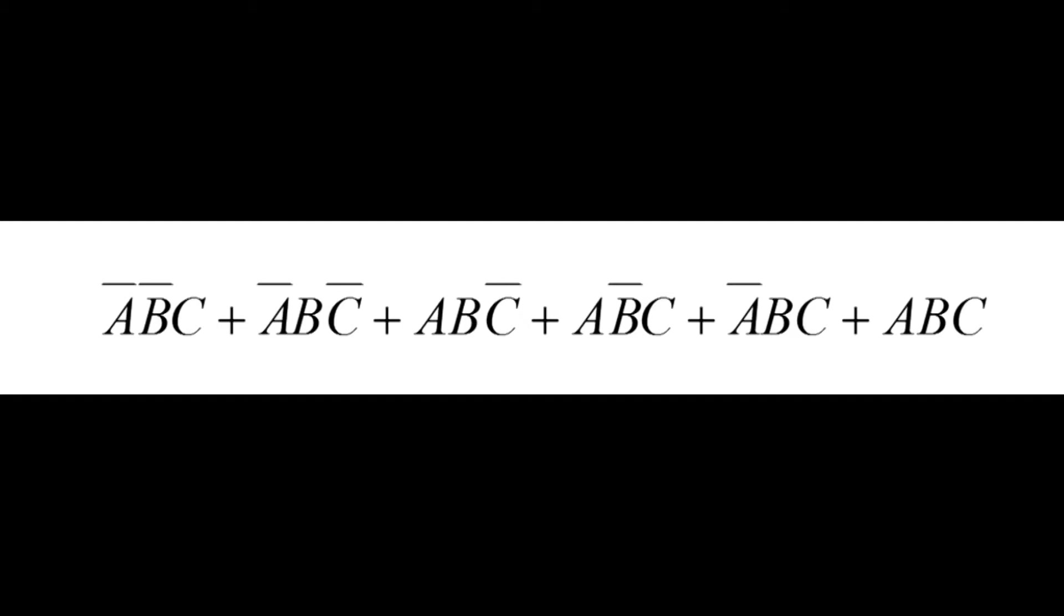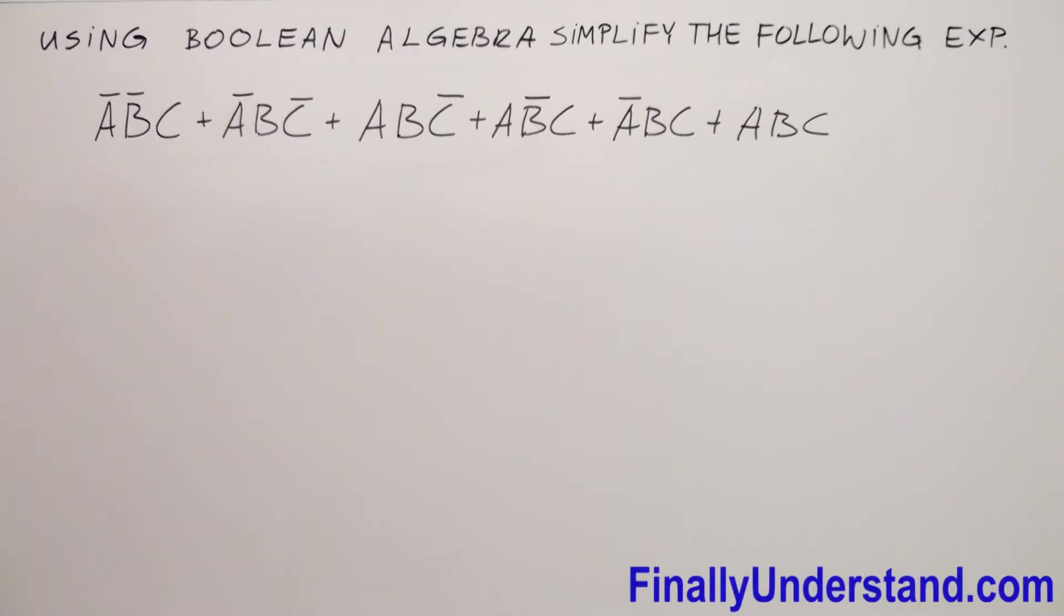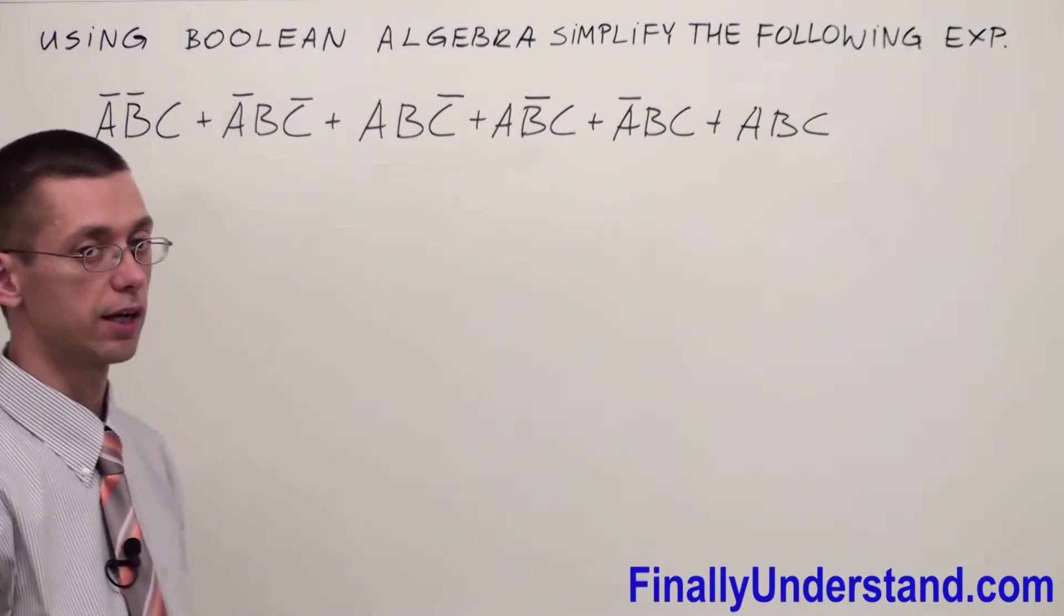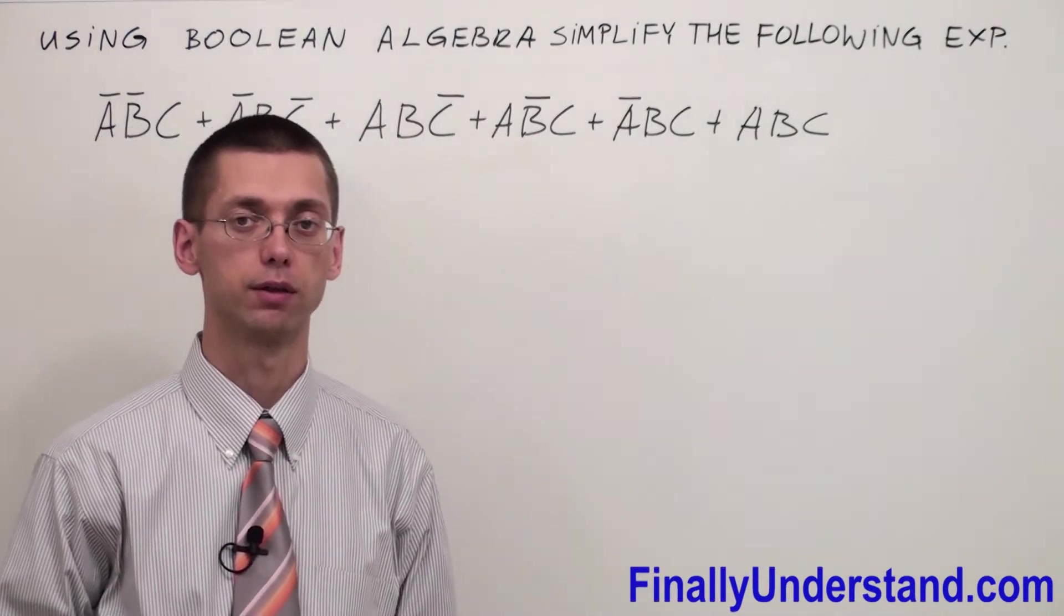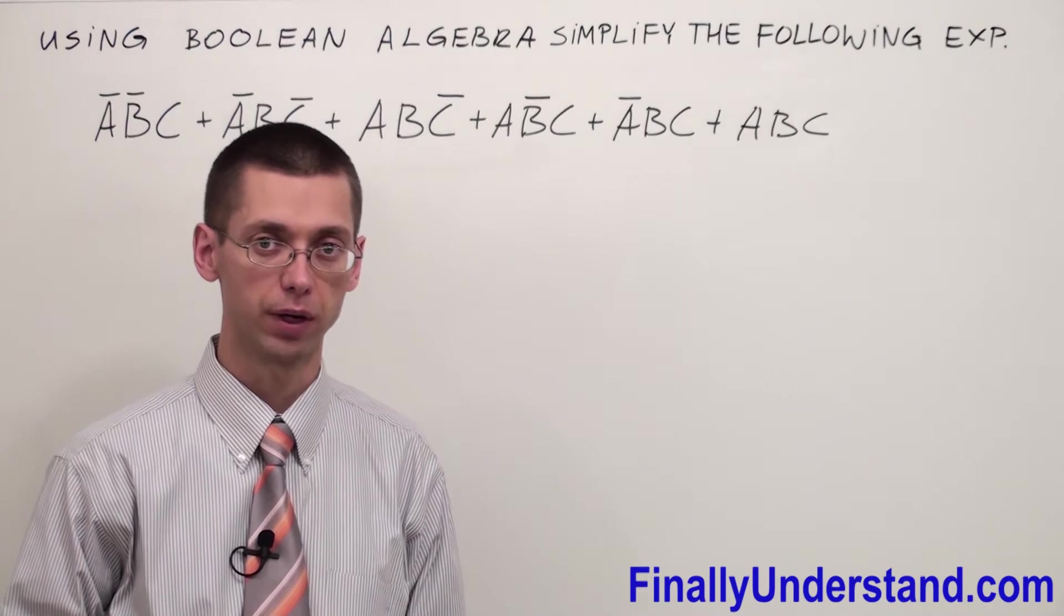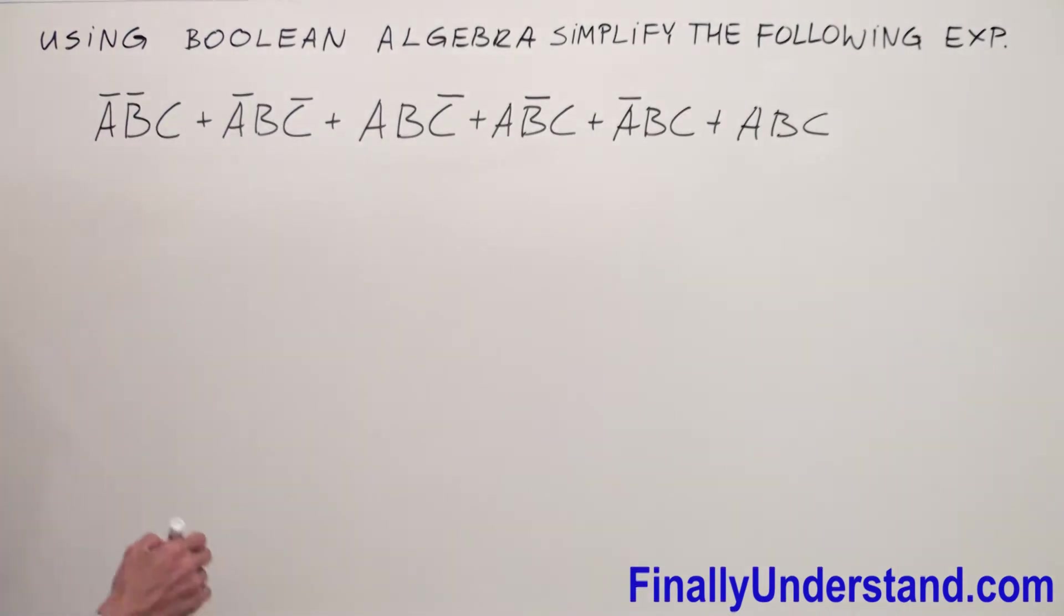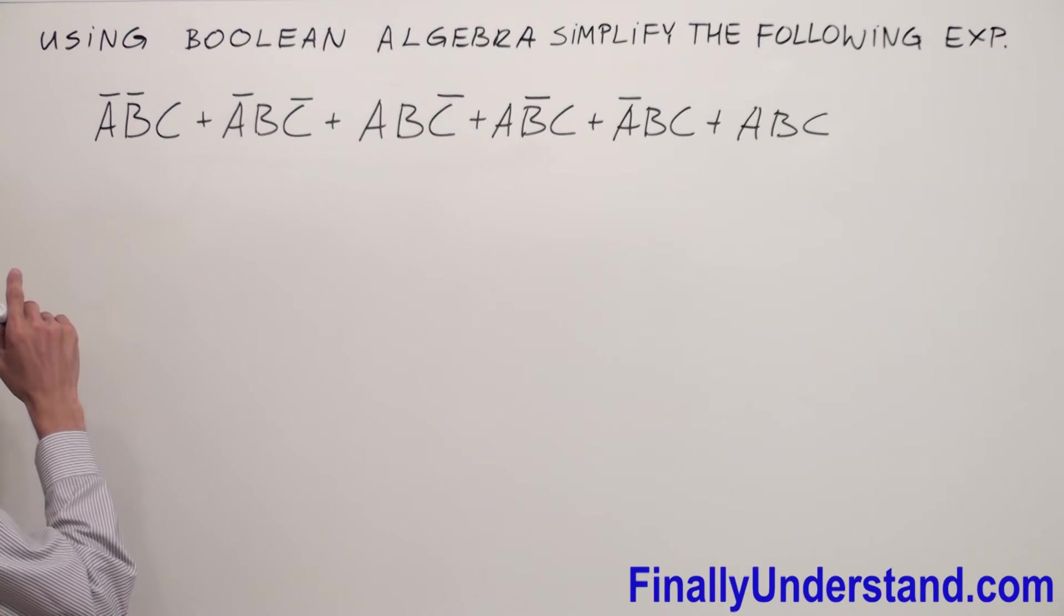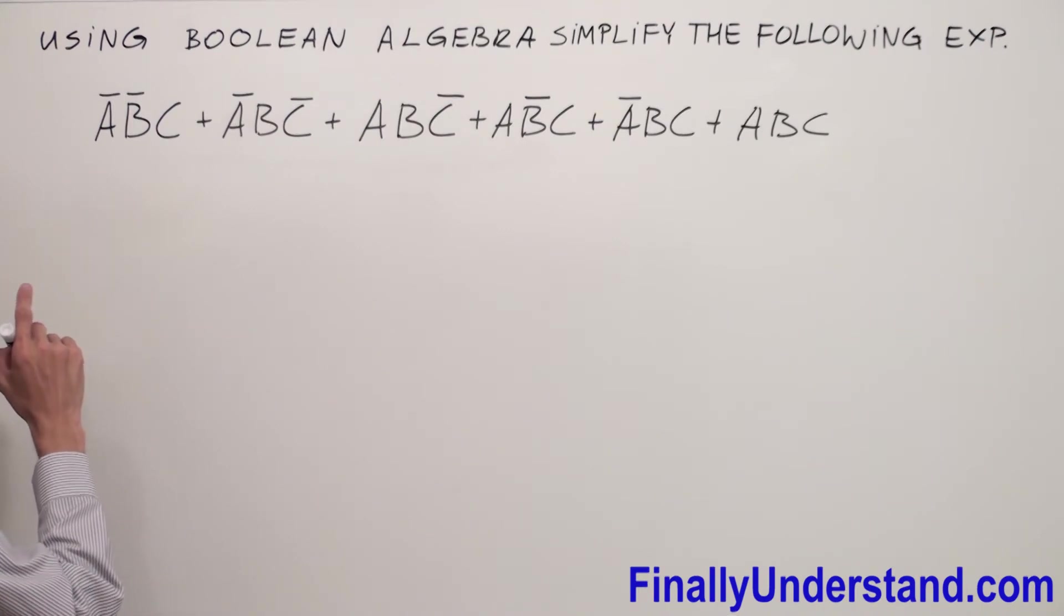Using Boolean Algebra, simplify the following example. We are going to start like always from factoring, and keep in mind that we will try in problems like this to factorize first two variables if this is possible.